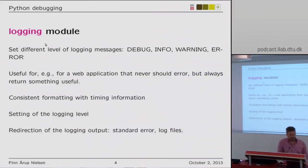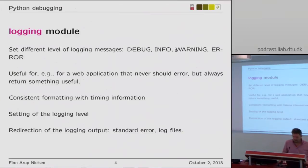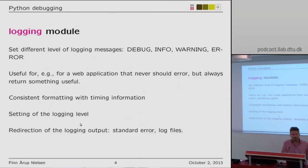The logging module has a number of different functionalities. You can set different levels of logging: debug, info, warning, error. The default is around info and warning. It can be useful in programs that need to run regardless of what the user provides — daemons and web applications. The logging module provides consistent formatting, timing information, and logging level. You can also redirect logging to a log file.